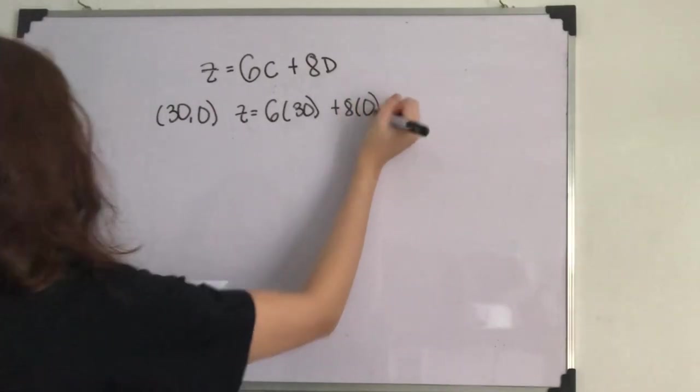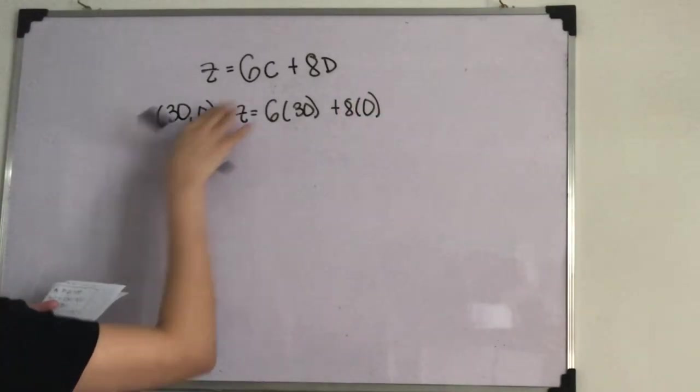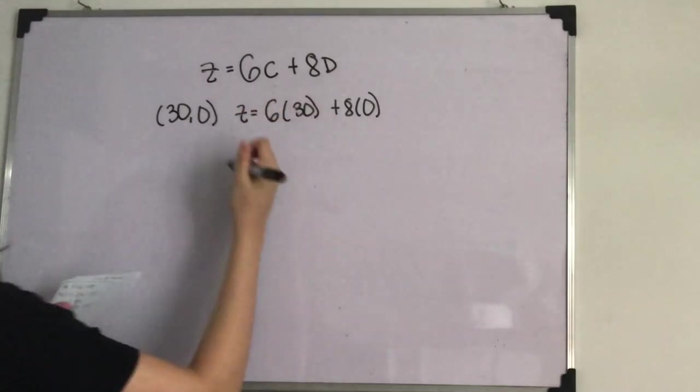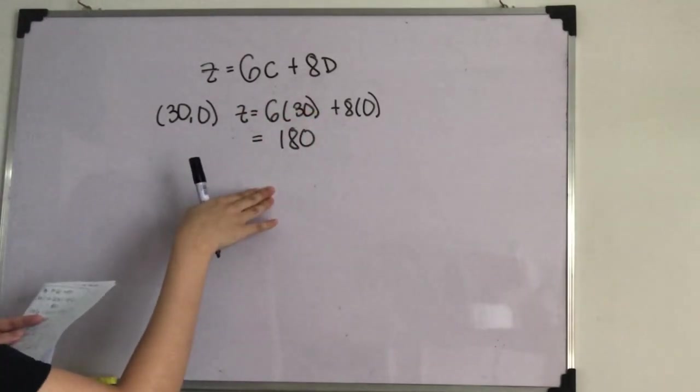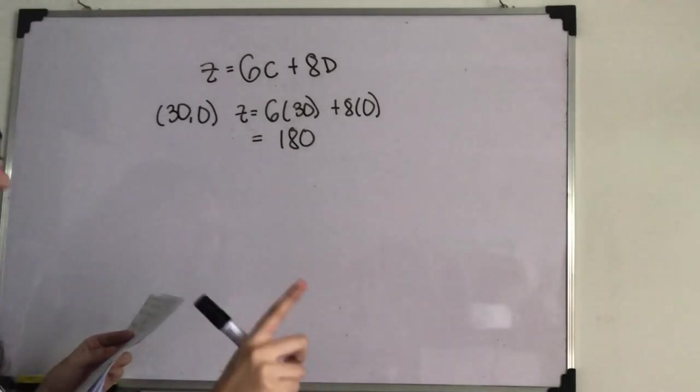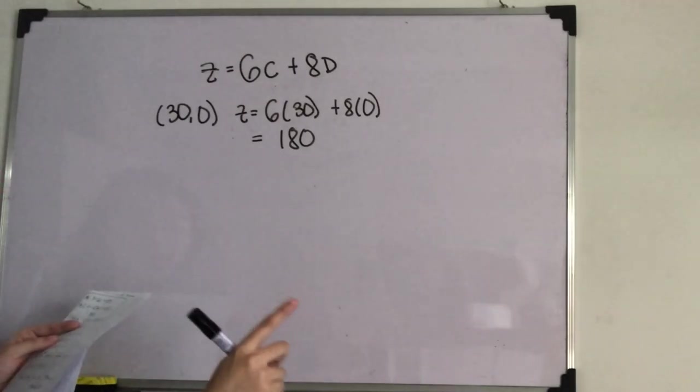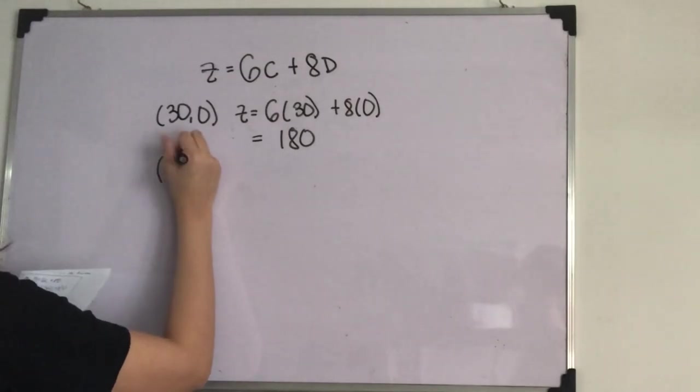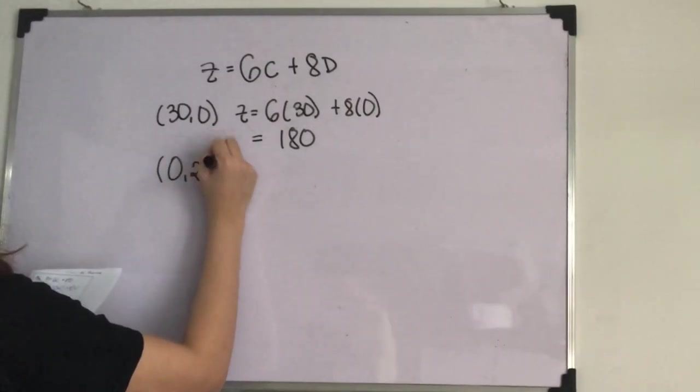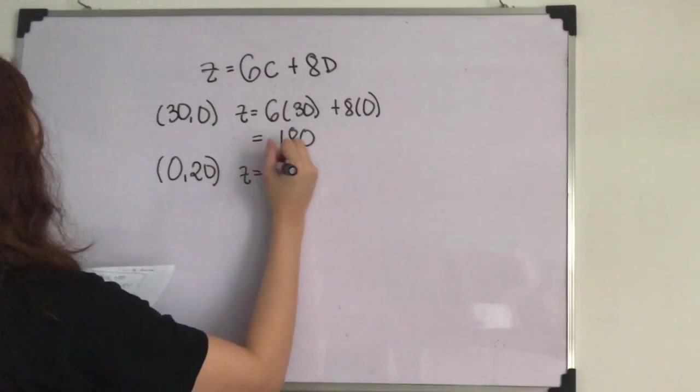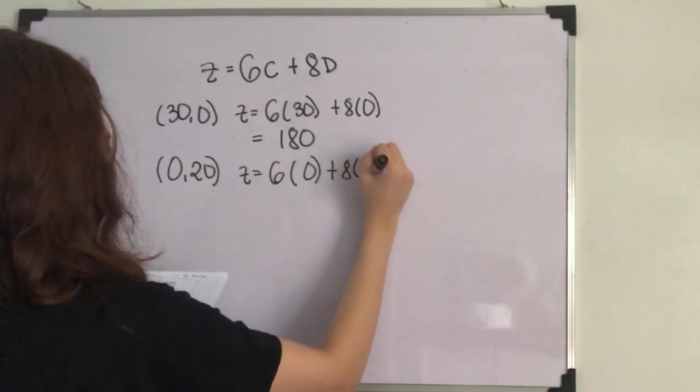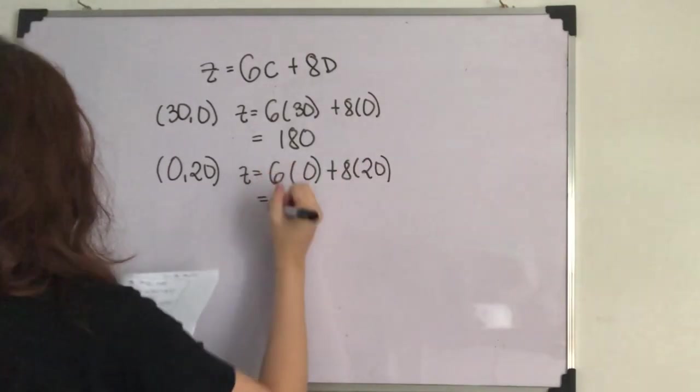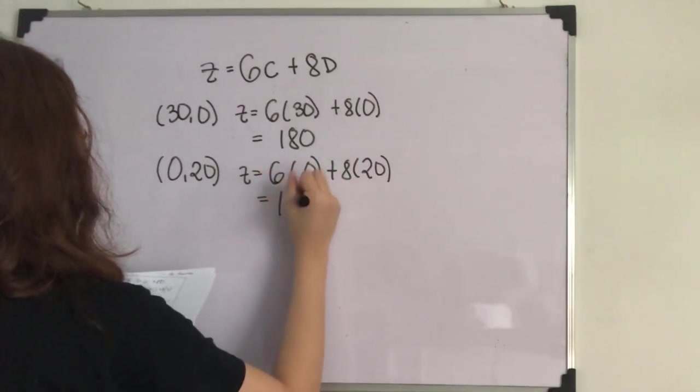We just substituted this to here and the answer will be 180. Next, we will try 0 and 20. Z is equal to 6 times 0 plus 8 times 20. It will give us 160.